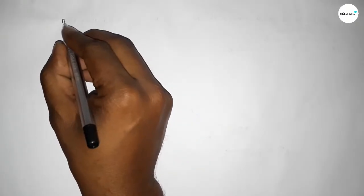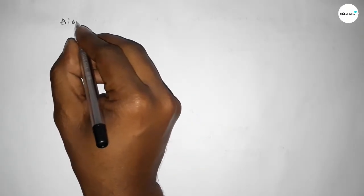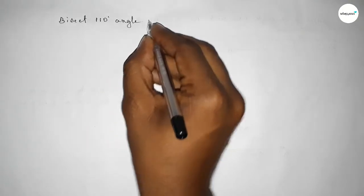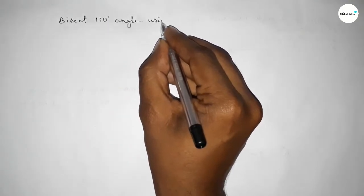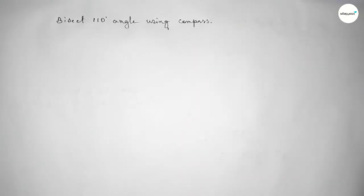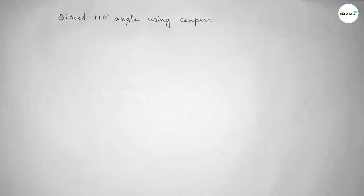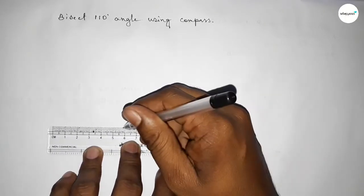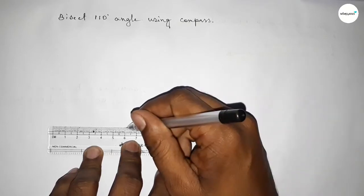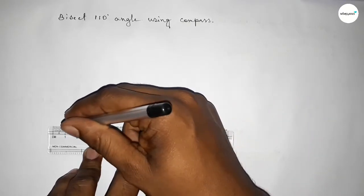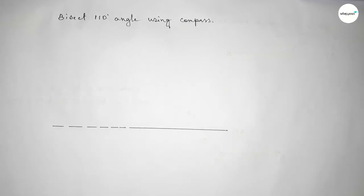Hi everyone, welcome to Sissar Classes. Today in this video we have to bisect a 110-degree angle using a compass. So let's start the video. First of all, we have to draw a line of any length, and we have to extend the line from the left side.